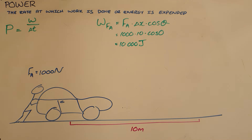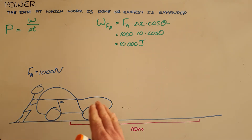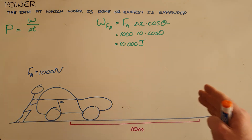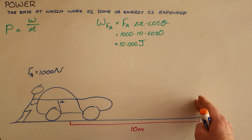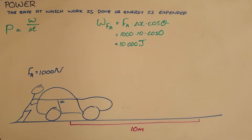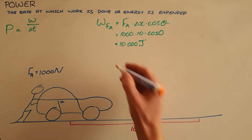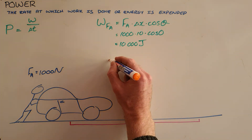Until this point we have not discussed the speed at which anything is done, because there is a very big difference between this being done in 3 seconds compared to 30 seconds, or 10 seconds compared to 100 seconds. And that difference is what we call power.